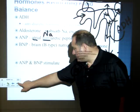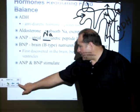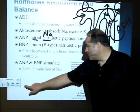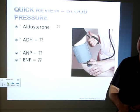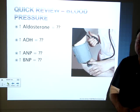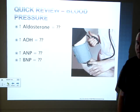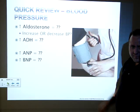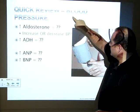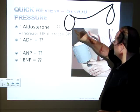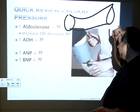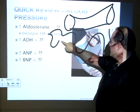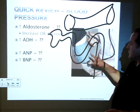ANP and BNP stimulate the renal excretion of sodium. Quick review: if you increase aldosterone, are you increasing or decreasing blood pressure? Think about the capillary right on top of the kidney tubule — aldosterone takes sodium out of the distal convoluted tubule and puts it back in the blood.